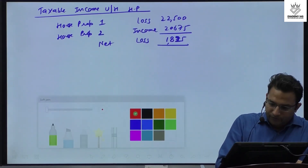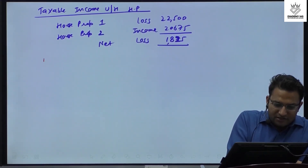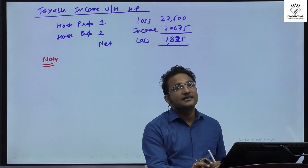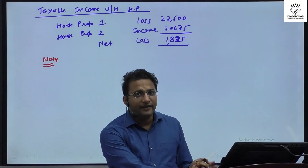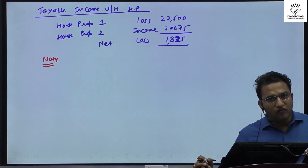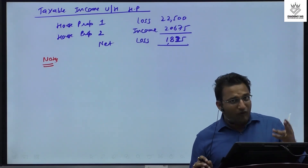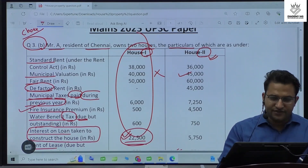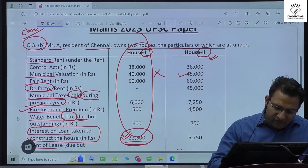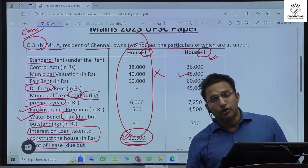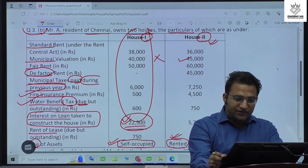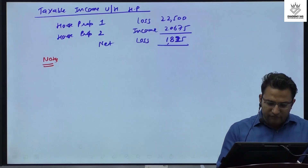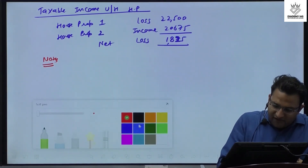Now we will provide notes, which are very important to get good marks. Notes make the examiner confident that you know the concept. Whatever amounts we are not including in the table, we explain why. Fire insurance premium is not allowed; water benefit tax is not taken because it is due but not paid; and rent on lease has also not been considered.